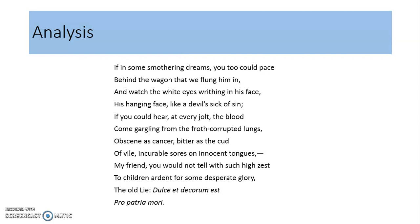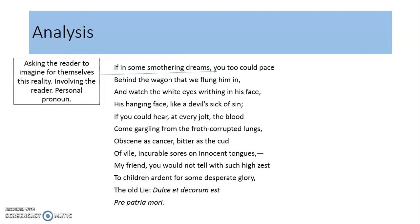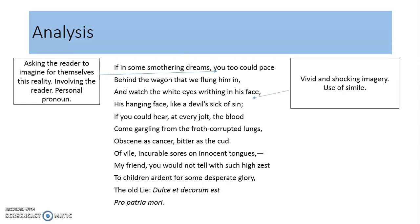'If in some smothering dreams you too could pace behind the wagon that we flung him in and watch the white eyes writhing in his face, his hanging face like a devil's sick of sin.' At the beginning of this stanza the poet asks the reader to imagine this reality for themselves. He involves the reader with the personal pronoun 'you too could pace behind the wagon that we flung him in,' asking the reader to put themselves in this situation. We also have a simile comparing the soldier's face to that of a devil who is sick of sin.